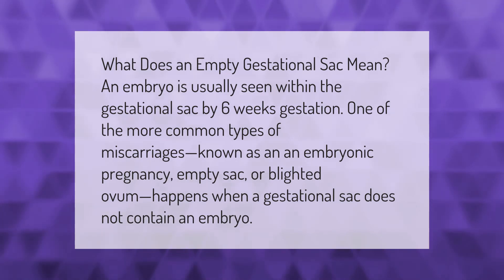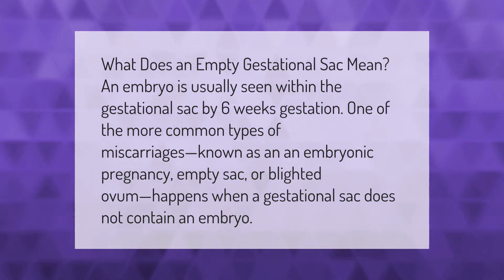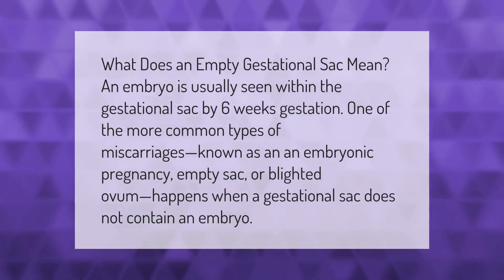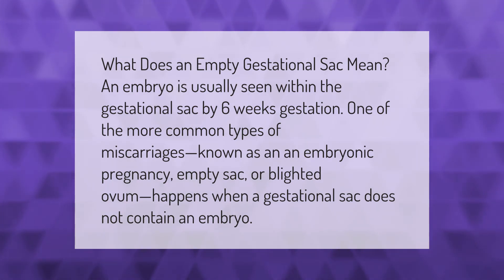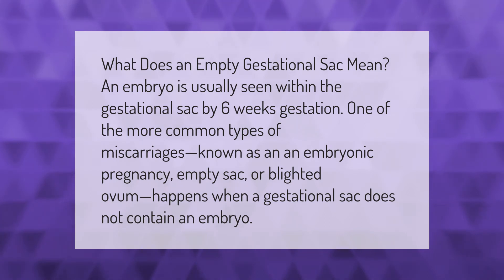An embryo is usually seen within the gestational sac by six weeks gestation. One of the more common types of miscarriages, known as an anembryonic pregnancy, empty sac, or blighted ovum, happens when a gestational sac does not contain an embryo.